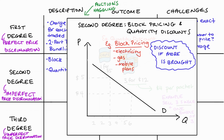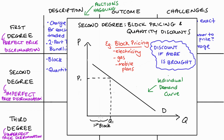Block pricing works in a similar way — you most often see it with electricity, gas, or mobile data plans. Looking at the demand curve for an individual: for the first block of quantities up to Q1, the firm charges P1 per unit. For the next block up to Q2, it's a cheaper per-unit price, P2. Again, we're pricing along the curve by offering discounts for buying more, which allows us to price the same product at different prices.